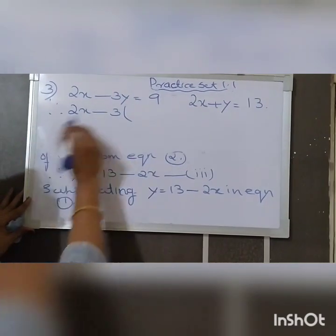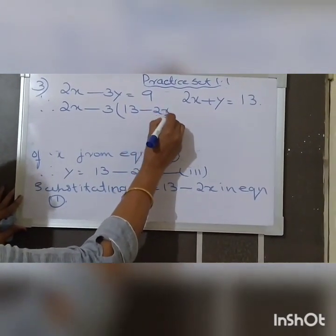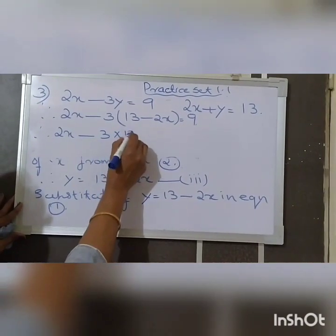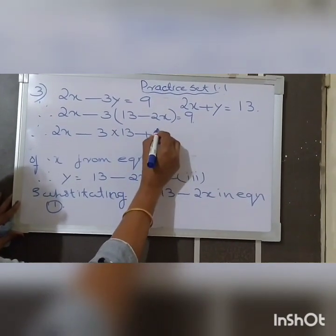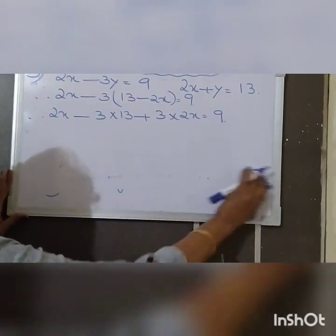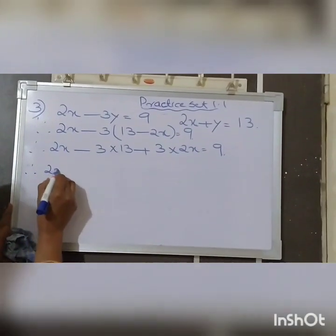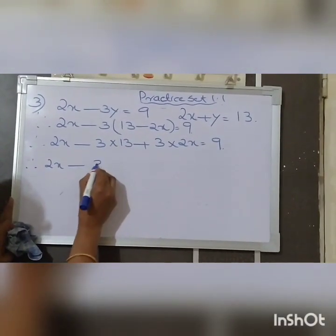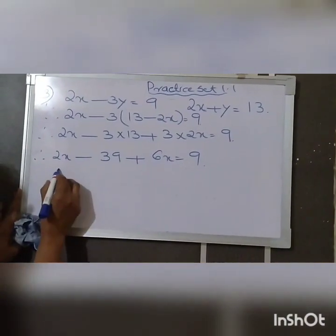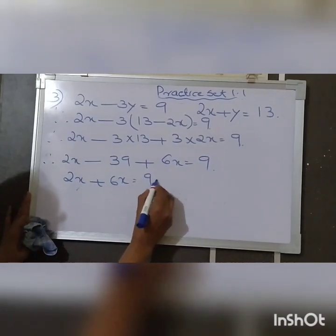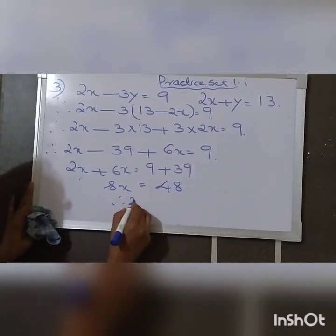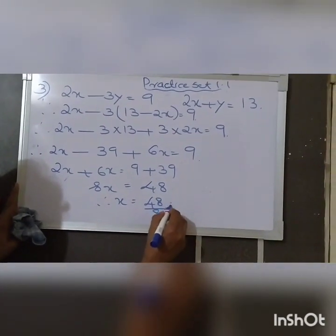Therefore: 2X minus 3 times (13 minus 2X) equals 9. Expanding: 2X minus 39 plus 6X equals 9. So 8X equals 9 plus 39 equals 48. Therefore X equals 48 divided by 8 equals 6.